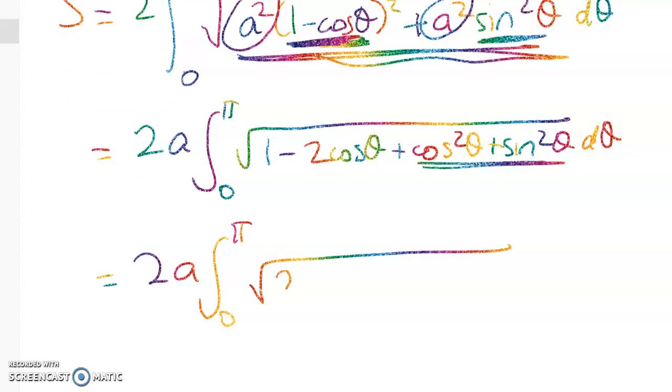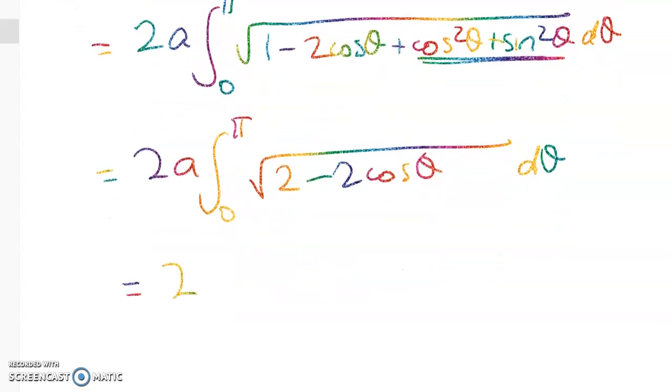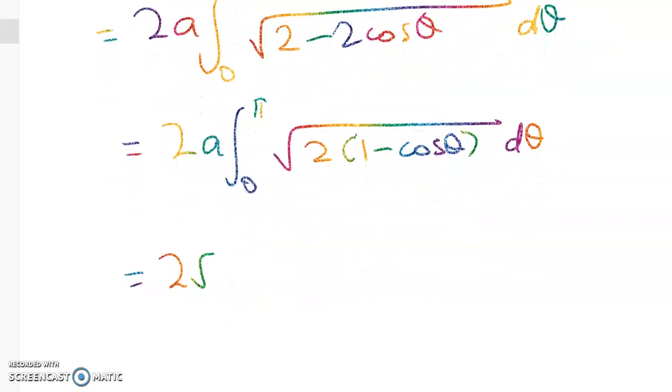So 2 - 2cosθ dθ which is 2a times, taking those constants out to the front over and over. We're left with this, 1 - cosθ dθ.